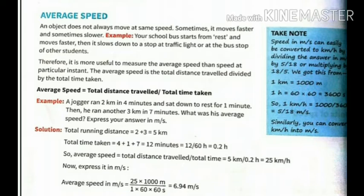For example, your school bus starts from rest and moves faster. Then it slows down at the traffic light or maybe stops, or sometimes it stops further to take other students. So the speed of the bus keeps changing.